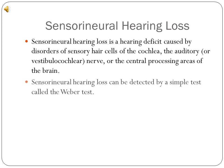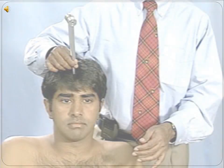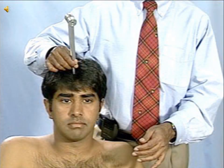Sensory neural hearing loss can be detected by a simple test called the Weber test. In the Weber test, a tuning fork or a similar device is placed on the mid-sagittal line of the patient's forehead. If the patient has a sensory neural hearing deficit in one ear, the sound he or she hears will lateralize to the other ear.